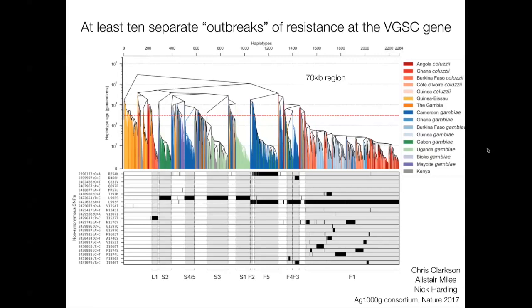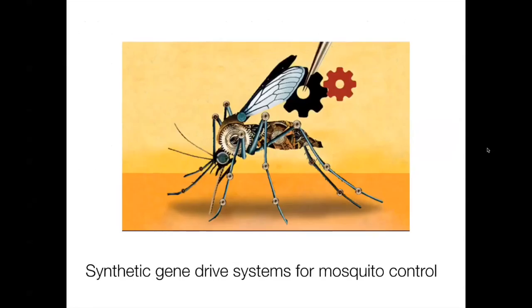By looking at this whole region at a haplotypic level, we can say that at least 10 times — just in the samples we've sequenced — these resistance-conferring mutations have evolved. In some cases, represented by the very long black bar on the right, these haplotypes have spread across vast geographic distances, from Burkina to Angola, and also between species, where alleles have crossed species boundaries.